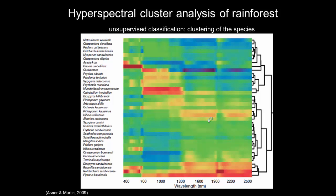In this slide, I show an example of the hyperspectral cluster analysis of rainforest species based on their reflected light across the full range of the spectra. Instead of having a unique vegetation response curve, here we have colors derived from the spectral signatures of each species — yellow and red showing high reflectance, green and blue showing low reflectance. The dendrogram on the right shows the spectronomic clustering of the species, following the same principle as an unsupervised classification.